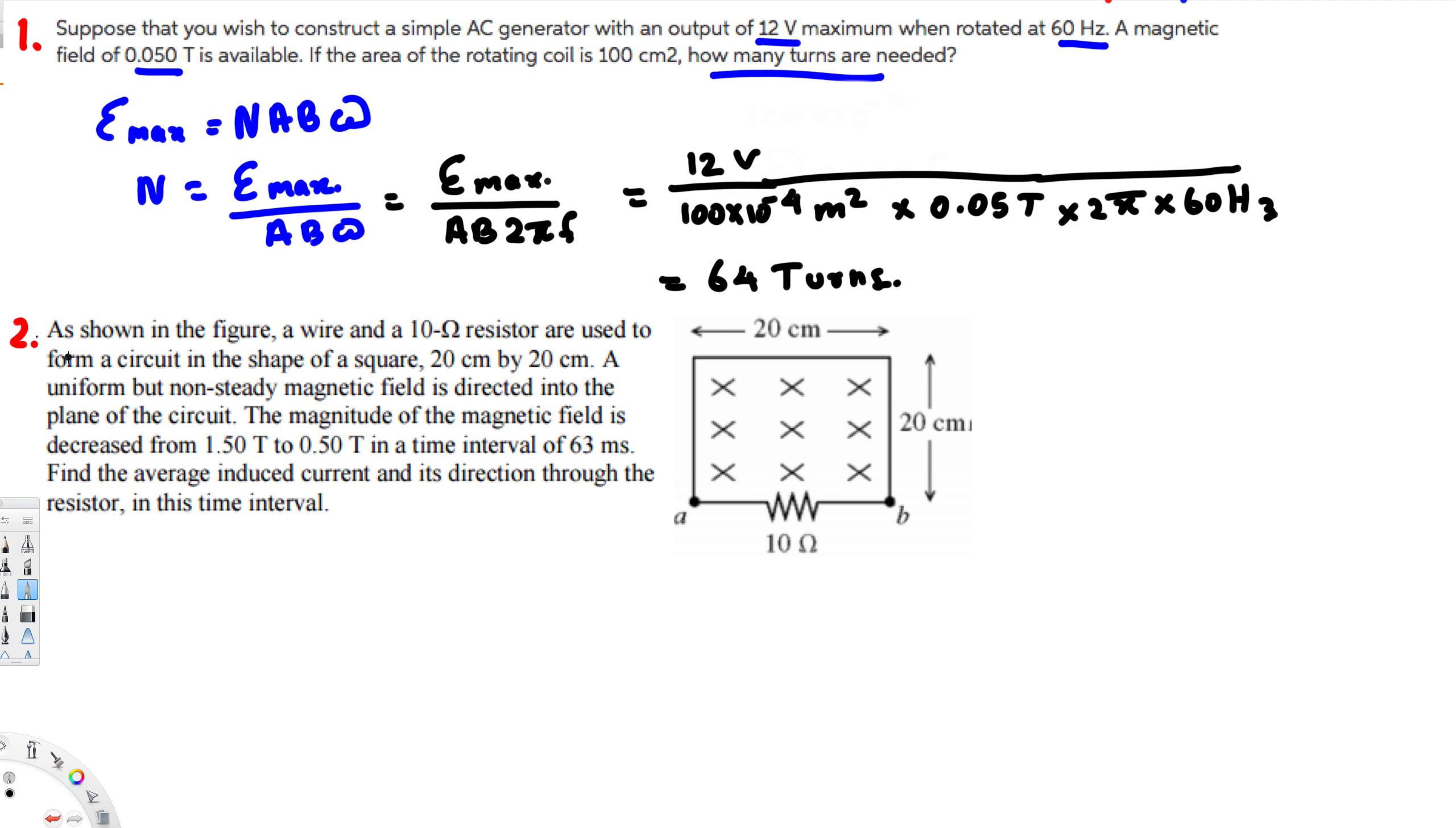Now let's look at this second problem. This question is asking: as shown in the figure, a wire and 10 ohm resistor are used to form a circuit in the shape of a square, 20 centimeter by 20 centimeter. A uniform but non-steady magnetic field is directed into the plane of the circuit. The magnitude of the magnetic field is decreased from 1.5 Tesla to 0.5 Tesla in a time interval of 63 milliseconds. Find the average induced current and its direction through the resistor.